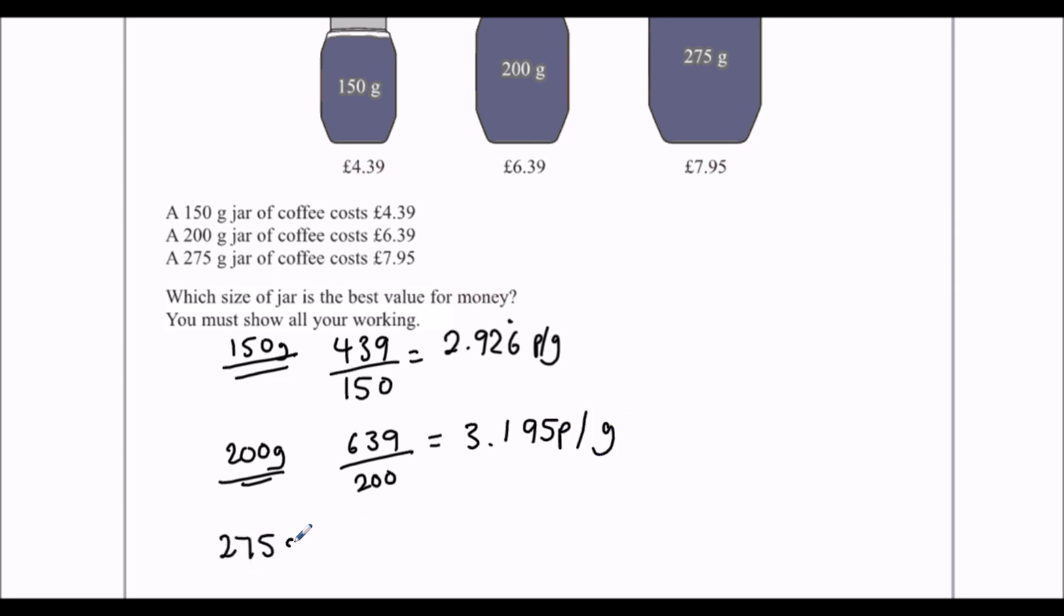275 grams, so it's 795 pence for 275 grams, so that's 2.899 recurring pence per gram.